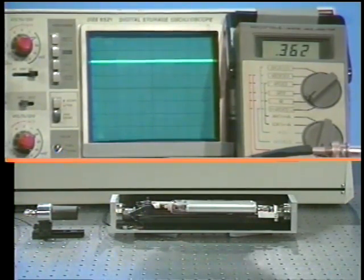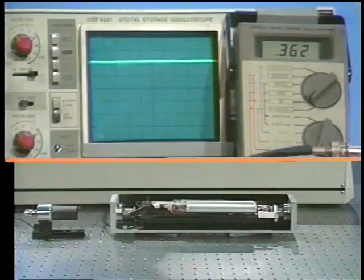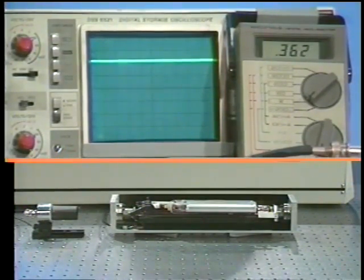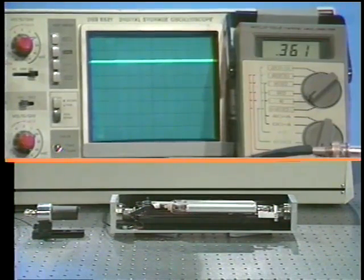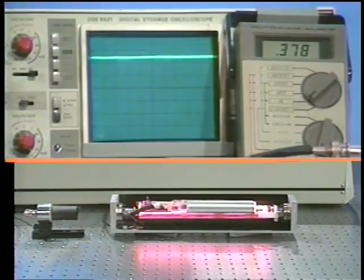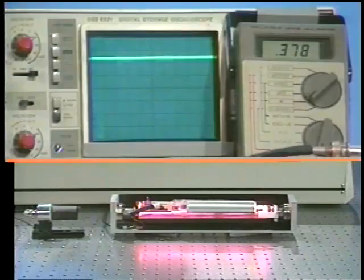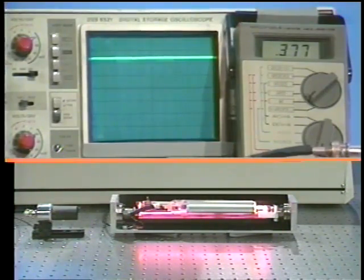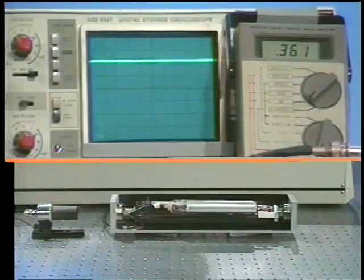Here is the light falling on the detector without amplification. Again, 360 something. And here comes the amplification. Again, it's close to 380. A little bit less than we had before. Maybe the amplifier is getting a little old. Here we are. Without amplification, we have this value.